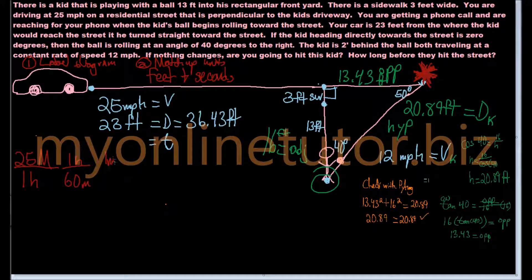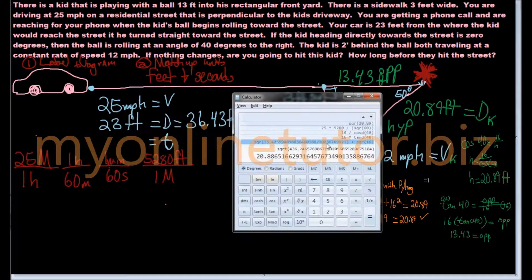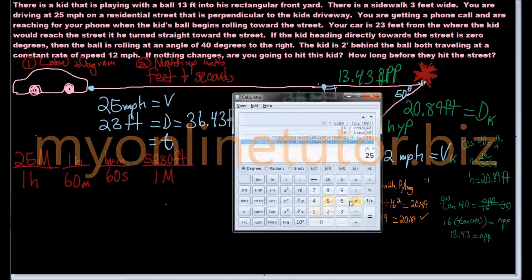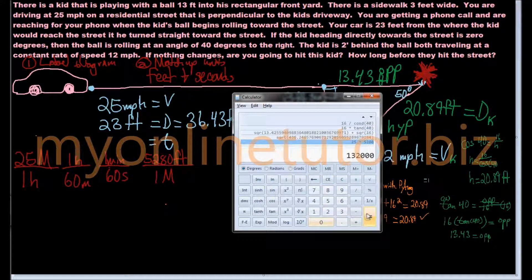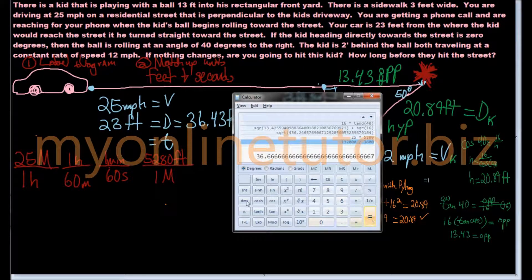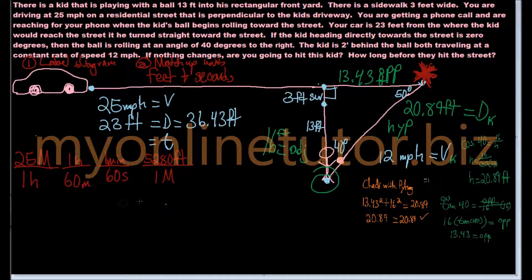By converting, you took 25 miles over one hour, then one hour over 60 minutes. Notice that since hours was on the bottom the first time, it needs to be on the top the next time, and they're going to cancel out. So now that hours is gone, you want to get minutes to be gone. So minutes was on the bottom of that second fraction, now it's on the top and the third, and then you have seconds that's left on the bottom. Last but not least, you'll go on and cancel out miles since it's 25 miles, that's on the top. Then the next time you use miles, it needs to be on the bottom, and 5,280 feet is one mile. Multiply it out, then divide. You get 36.67 feet per second.